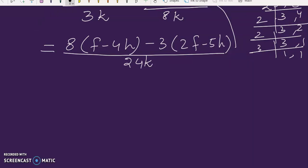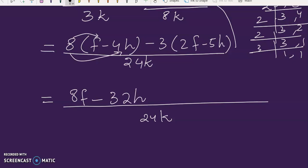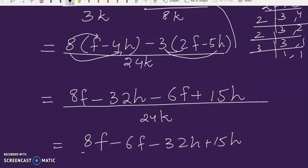Now we have to open the brackets. 8 times f is 8f, 8 times 4 is 32h, now 3 times 2 is 6 and f comes with it, now 3 times 5 is 15 and h with it. Now minus minus plus will come over here. Now we combine the like terms.